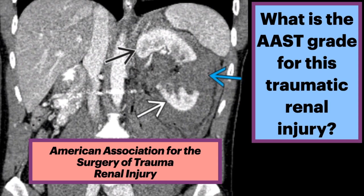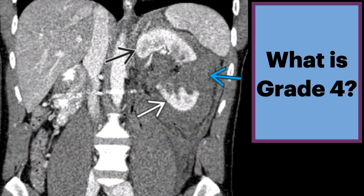Let's review the renal injury grading from the American Association for the Surgery of Trauma. Coronal CT during the nephrographic phase following a gunshot wound to the left flank shows fracture of the left kidney. The superior and inferior fragments are perfused but separated and surrounded by intermediate attenuation fluid. This is a grade 4 injury.